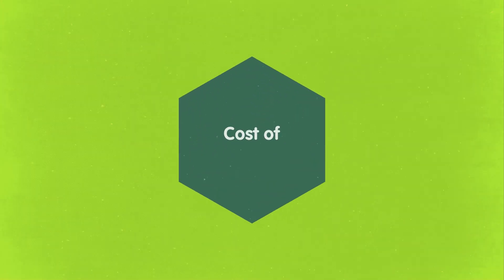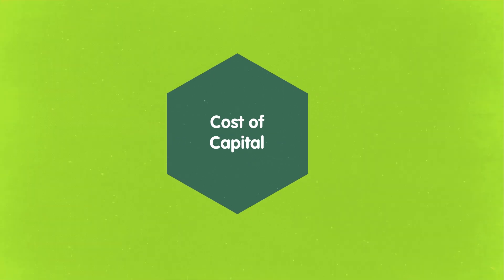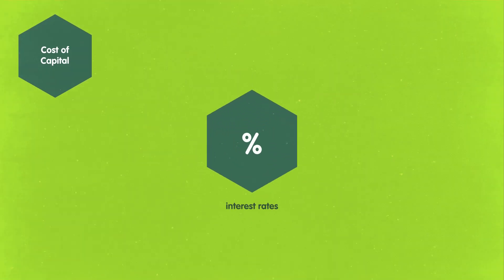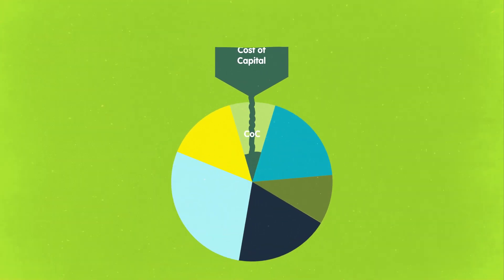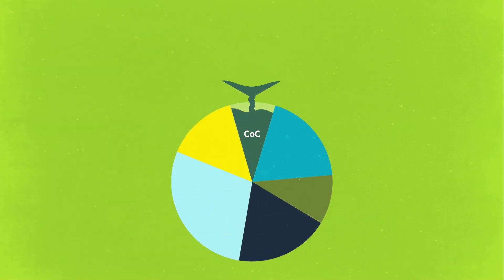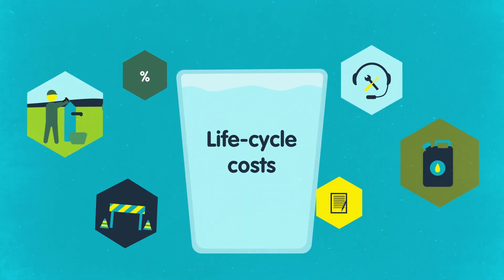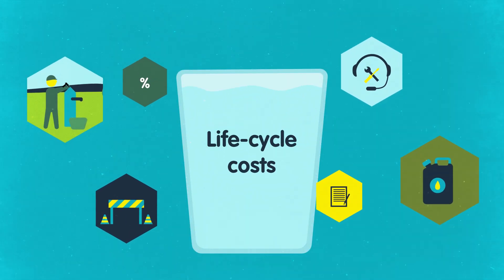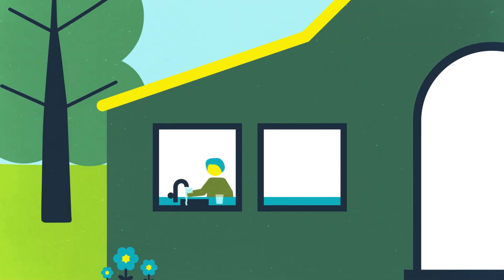And finally, cost of capital, such as interest rates on loans, are what it takes to access finance to fuel the system construction. For a service to be sustainable, all these six cost categories must be fully covered.